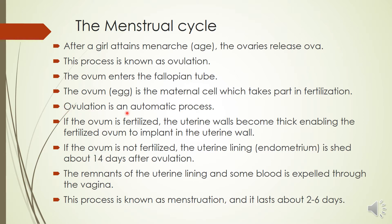Ovulation is an automatic process — we cannot put a stop to it. If the ovum is fertilized, the uterine walls become thick, enabling the fertilized ovum to implant in the uterine wall. Implant means placing itself in the uterine wall.